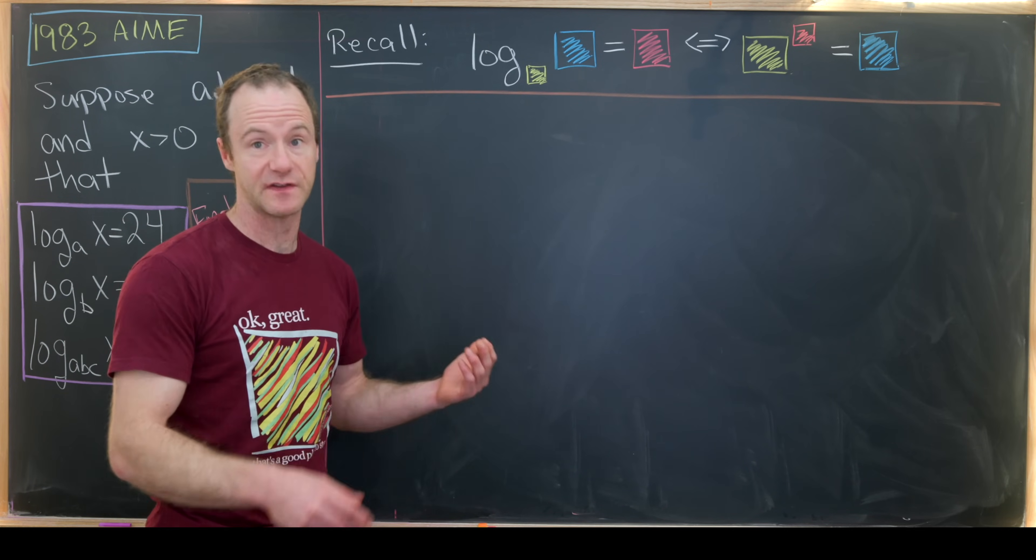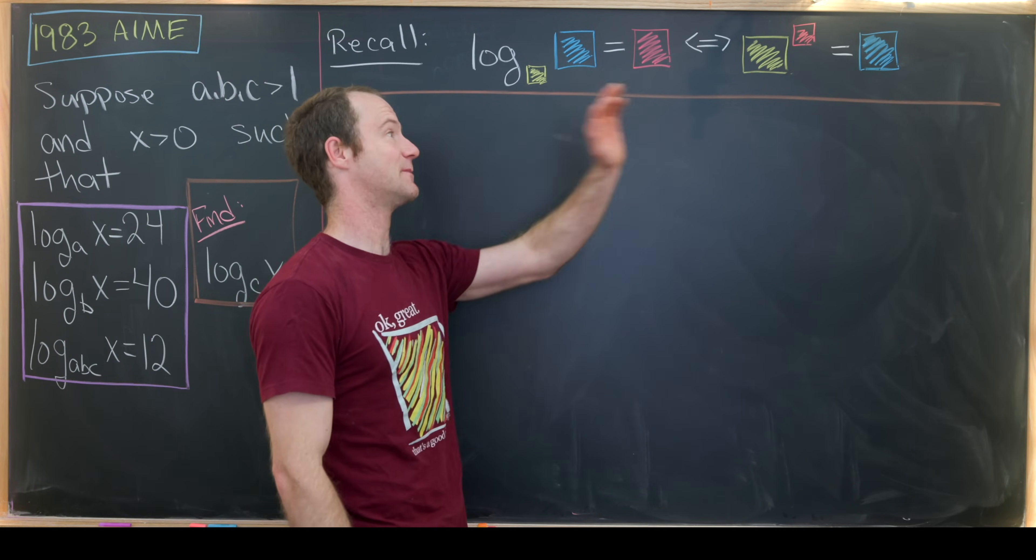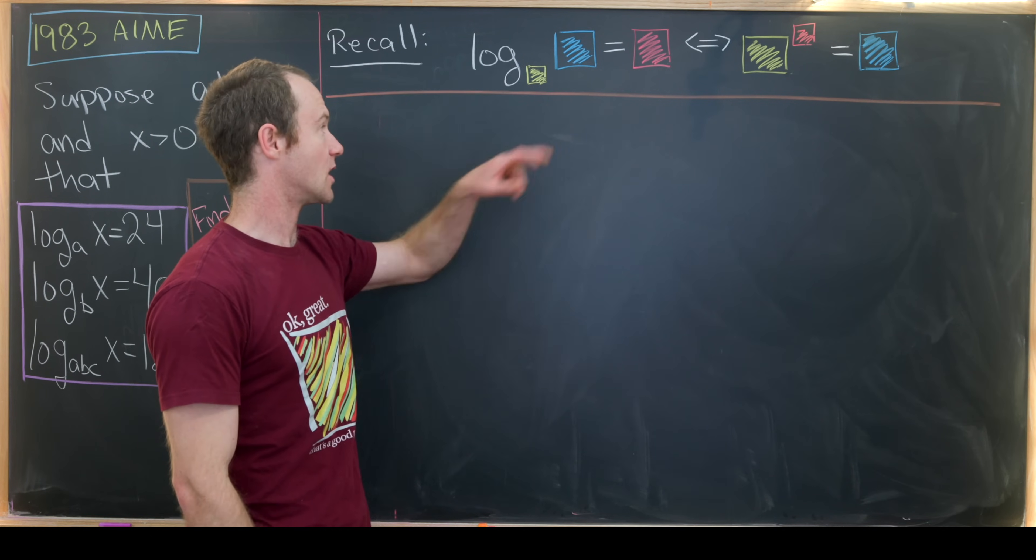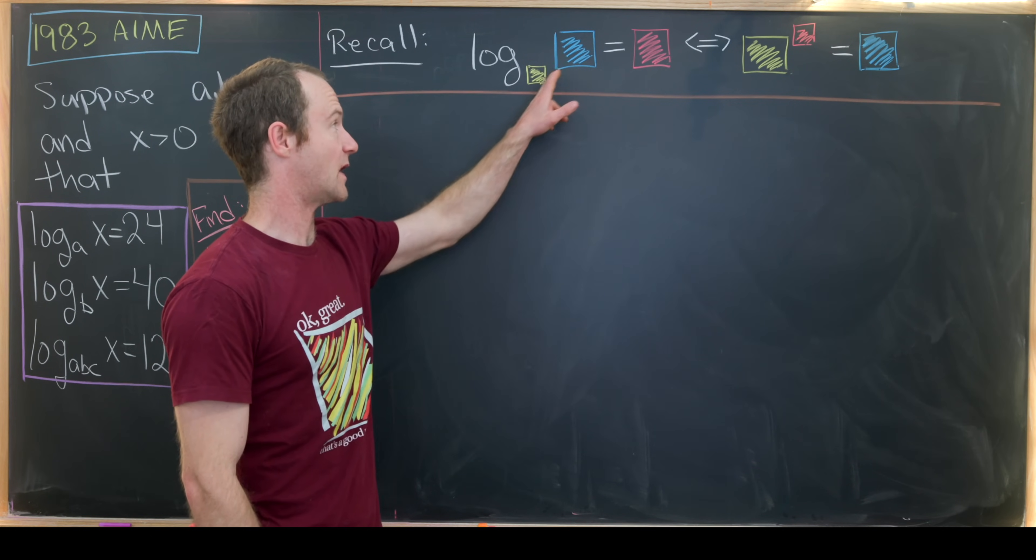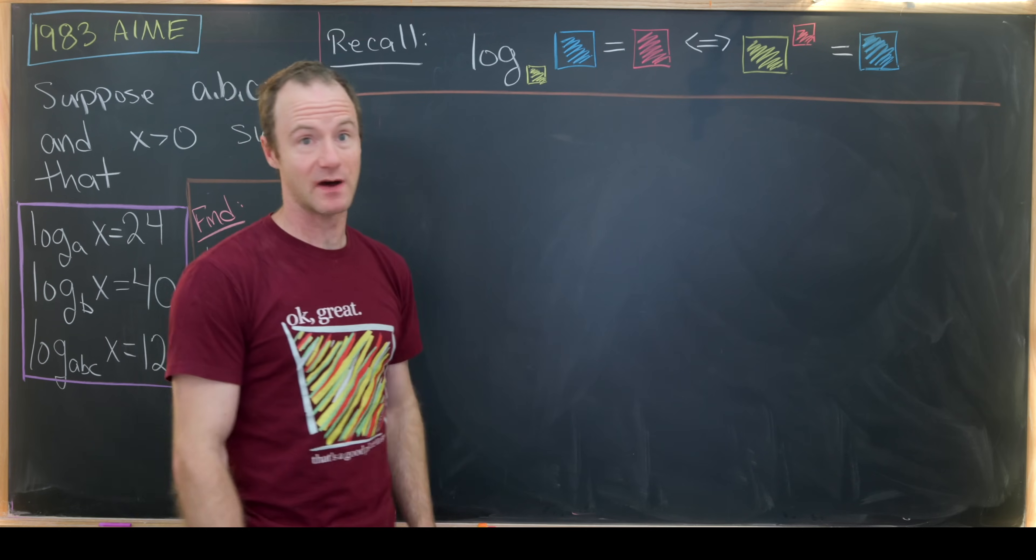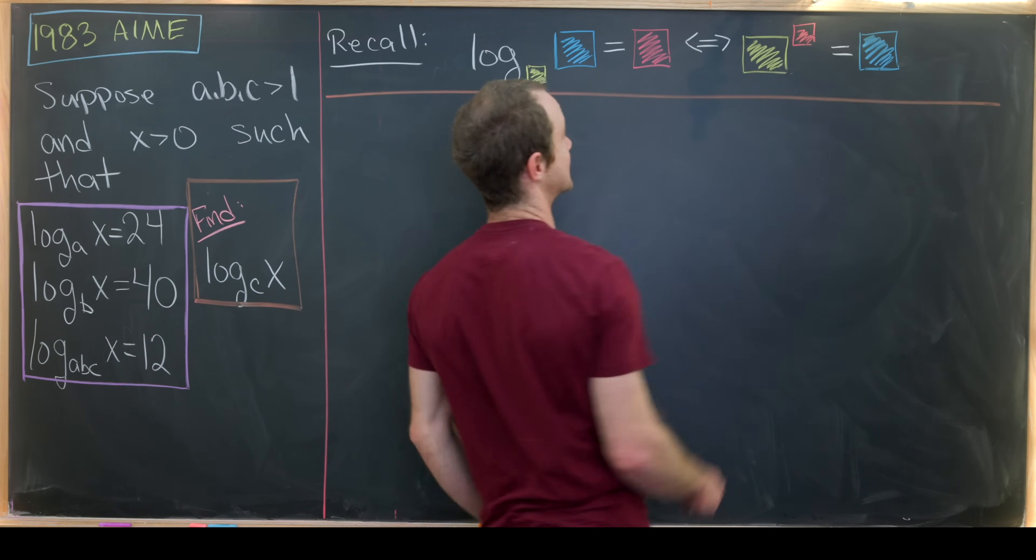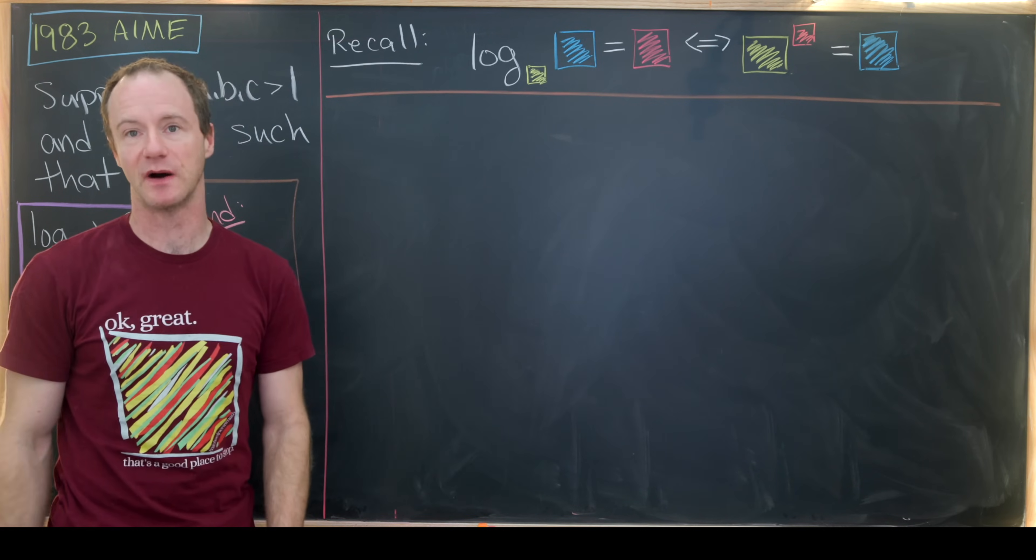Generally, if you want to solve anything with a logarithm, it's nice to pass to the exponential world. So if you take log base this yellow box of blue box equals red box, that's equivalent to yellow box to the power red box equals blue box.